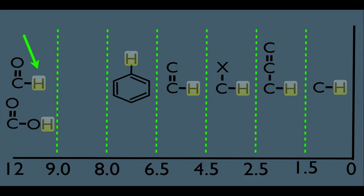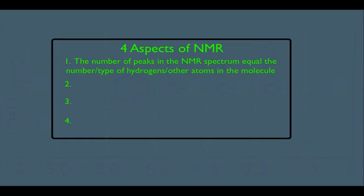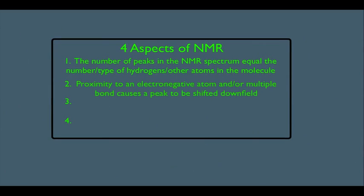So what's it all about here? Second aspect of NMR. That is number two here. Proximity to an electronegative atom and or multiple bond causes a peak to be shifted more downfield.